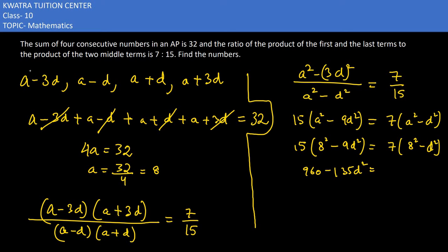7 multiply 64, so we would get 448 minus 7d square. Now numbers go one way, d square values go one way. 960 minus 448 which is 512. Right side we have minus 7d square and we have plus 135d square on the right hand side, so it is 128d square. So what value you would get? 512 divided by 128 which is 4. So 4 is equal to d square, that means d would be either plus or minus 2.